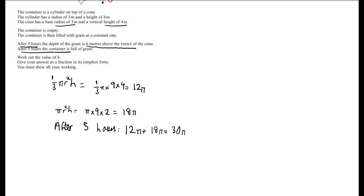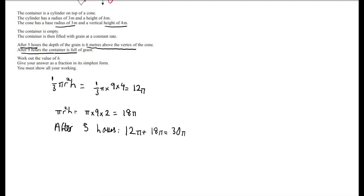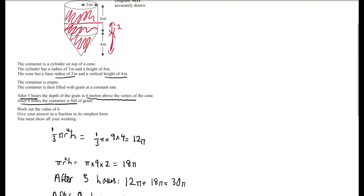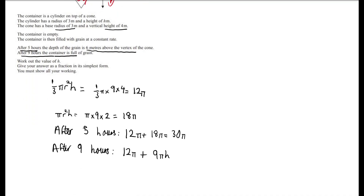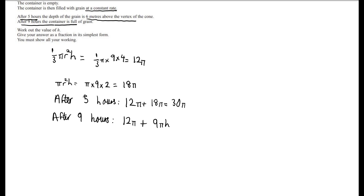We're told that after 9 hours the container is full, so the volume of grain after 9 hours is the volume of the cone plus the entire volume of the cylinder. We already figured out the volume of the cone was 12 pi. For the volume of the cylinder, the formula is pi r squared h and the radius is 3, but this time we use height h, so this is 9 pi h. Since the container is filled at a constant rate, the volume after 5 hours must be 5 ninths of the volume after 9 hours. So we write: 12 pi plus 9 pi h, times 5 ninths, equals 30 pi.